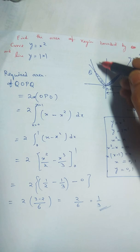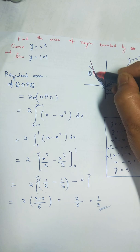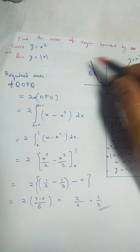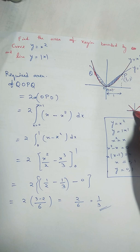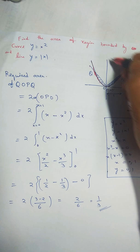So I have made this parabola like this. This is the parabola, and the line is y=|x|. The line y=|x| graph is always like this, okay? So I have made it here. This is the x-axis and this is y-axis.